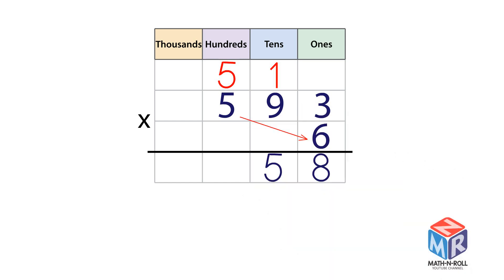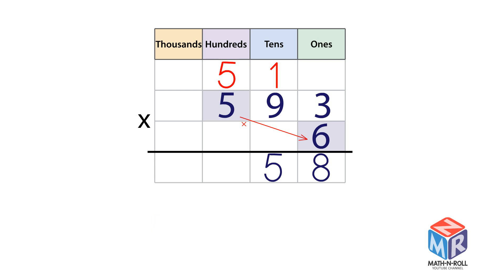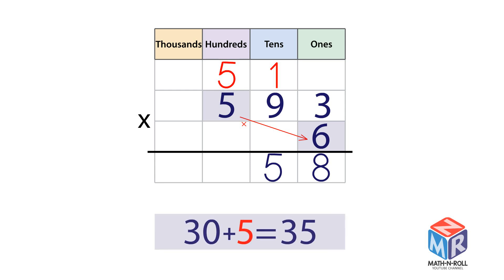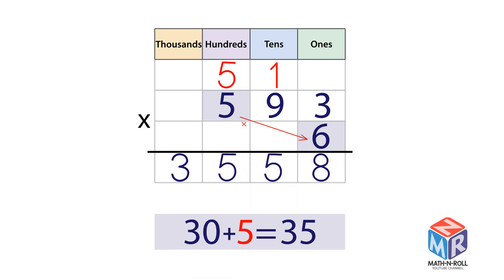Multiply the 100s. 5 × 6 hundreds equals 30 hundreds. Add the regrouped hundreds: 30 hundreds plus 5 hundreds equals 35 hundreds. 35 hundreds is the same as 3 thousands and 5 hundreds. The answer is 3,558.